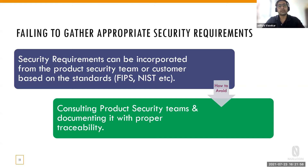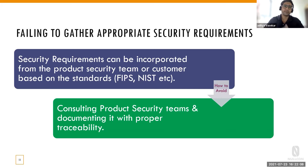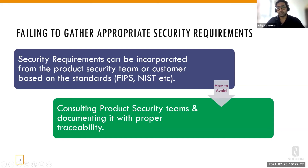How to avoid it: consult with the product security teams and document with proper traceability. Traceability is very important — you get the requirements, you need to work on them, architect accordingly, implement those requirements, test them, see that they are actually implemented, and document it all. Moving forward, that documentation might be required by customers or certain governing firms.